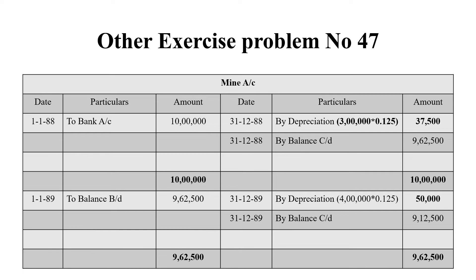On 1-1-1988, we purchased a mine for 10 lakh rupees — debit the mine account, credit bank account. On the credit side, depreciation: we extracted 3 lakh tons. So 3 lakh × 0.125 = 37,500 rupees depreciation. The balancing figure is 9,62,500, which is brought down to the next year.